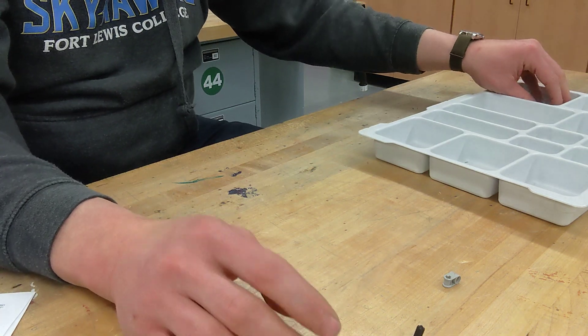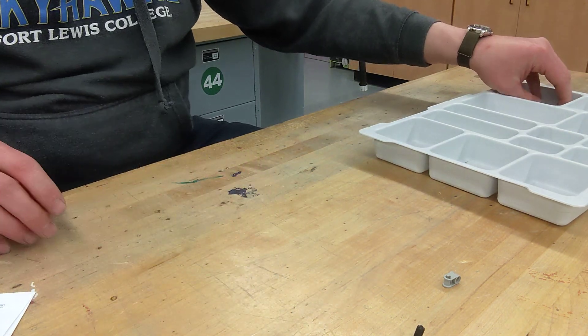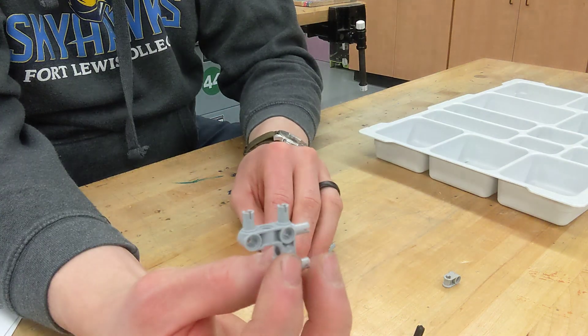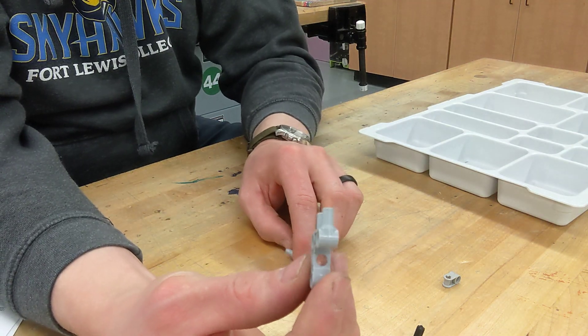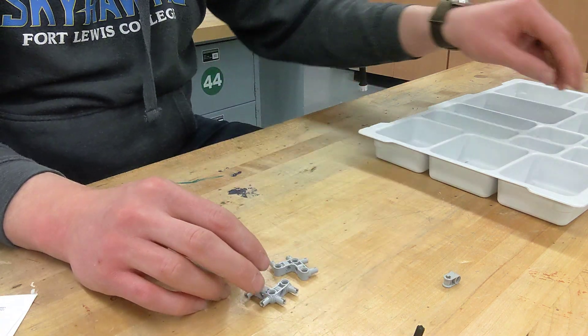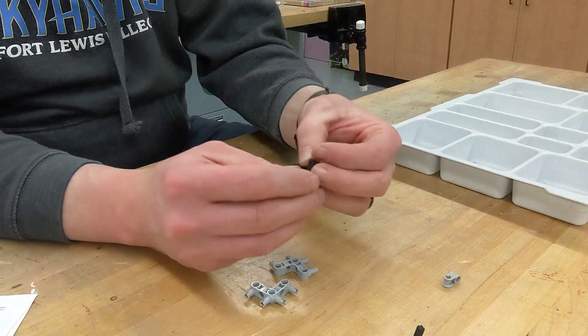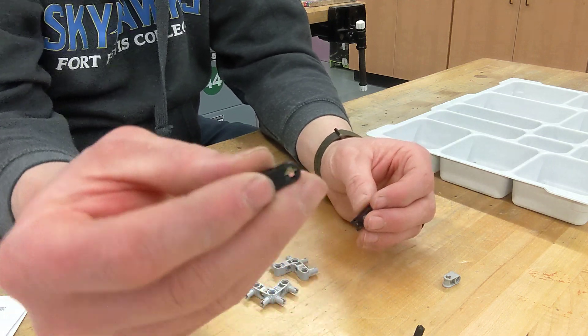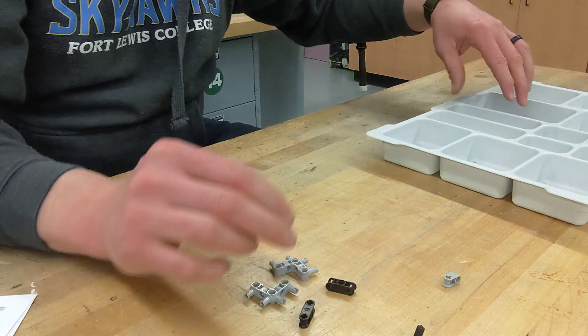So next thing we need is we're going to need this angular connector peg, and this is called a three by three module. So we're going to need two of those. We're going to need a double cross block in three module.